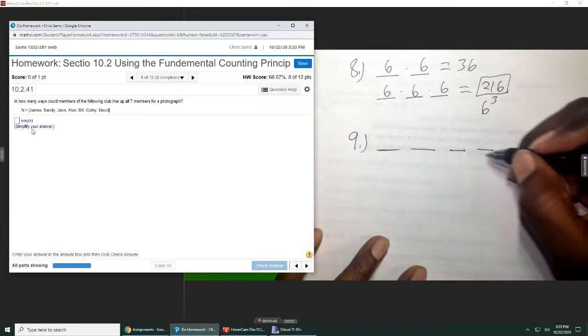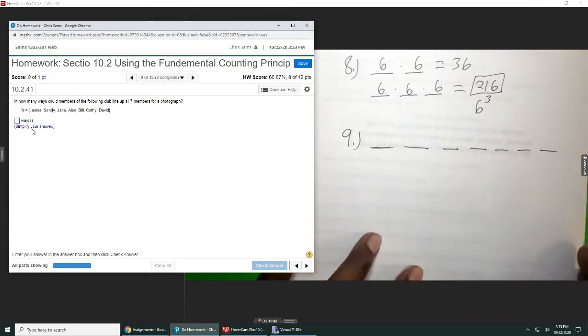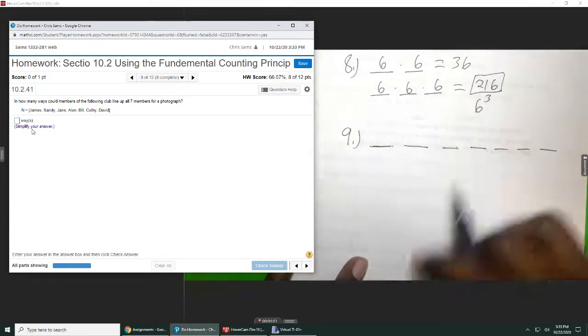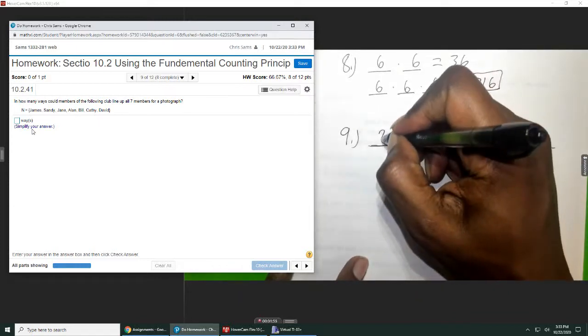We have seven people. One, two, three, four, five, six, seven. So whenever I go to pick the first person in line, it doesn't matter who I pick. I have seven people to choose from.